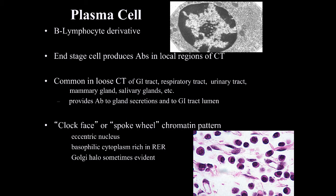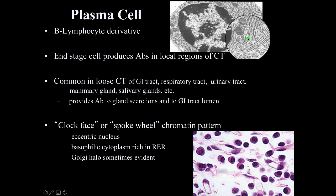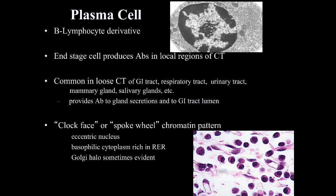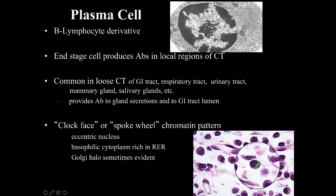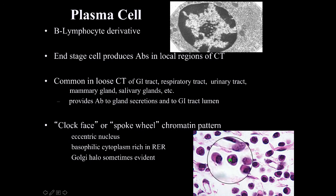Plasma cells provide antibodies to glandular secretions and add antibodies to the lumen of the GI tract. At the electron microscopic level, plasma cells have a characteristic clock-faced nucleus, where clumps of heterochromatin coalesce around the periphery of the nuclear envelope, and lots of rough ER in the cytoplasm. At the light microscopic level, the cytoplasm is very basophilic due to the rough ER content, and a Golgi halo is often visible.